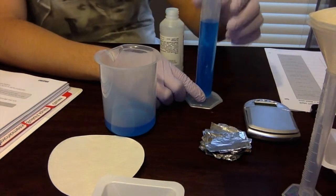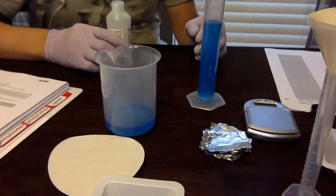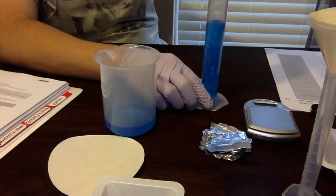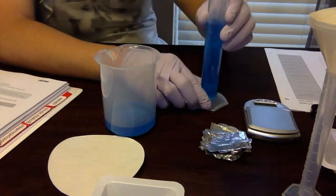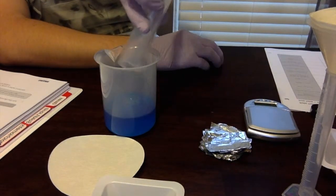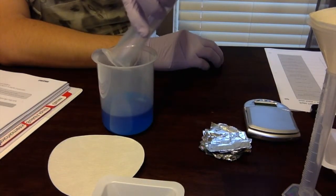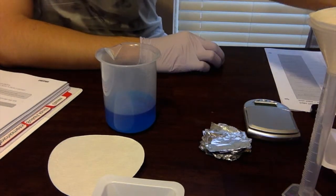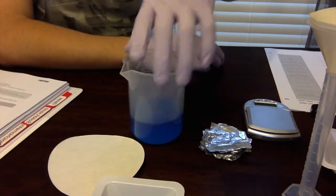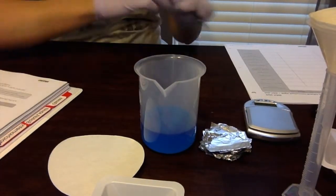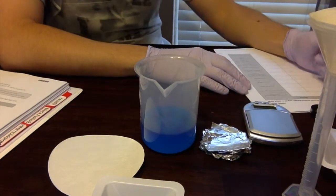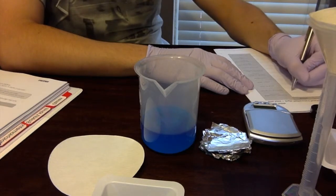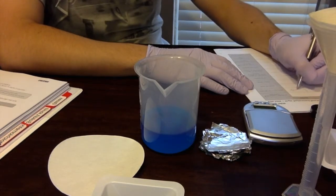Okay, so it looks like we have just one milliliter short of 100 milliliters. So we have 99 milliliters of copper sulfate. So we'll set this off to the side, we're going to come back to it. Now we want to go ahead and record how much of the copper sulfate we have. So I'm going to record we have 99 milliliters.